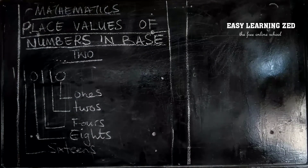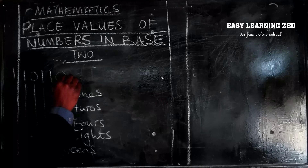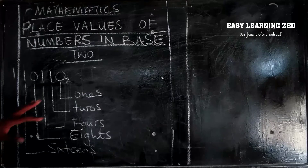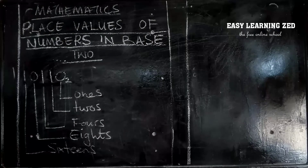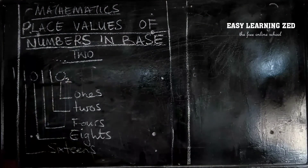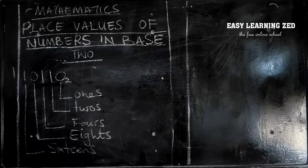So these are the place values of numbers in base 2. I just forgot to put a small subscript 2 here to indicate that this number is in base 2. If I don't put the small 2 here it will be misleading — though most of the time we don't write the small 2 down, you just write it as it is. So the small 2 indicates that this number is in base 2.